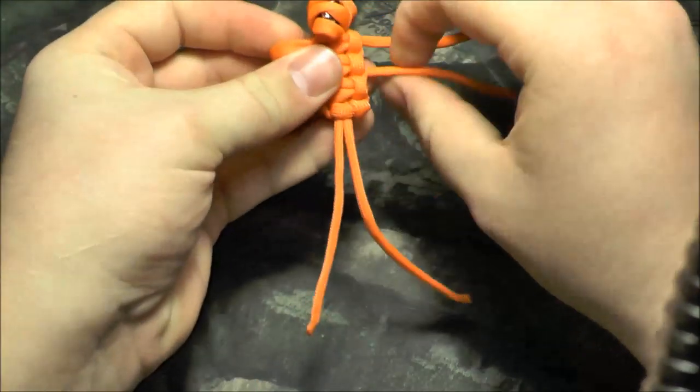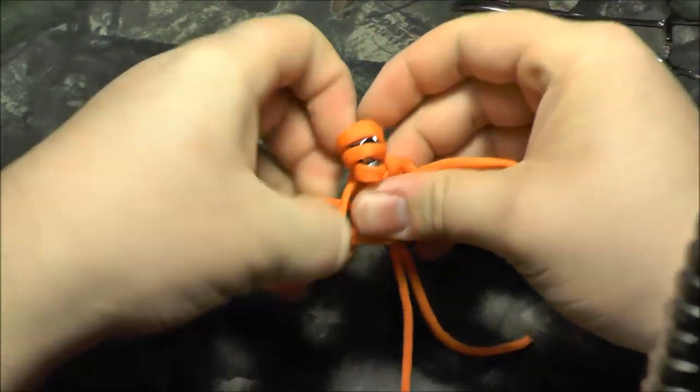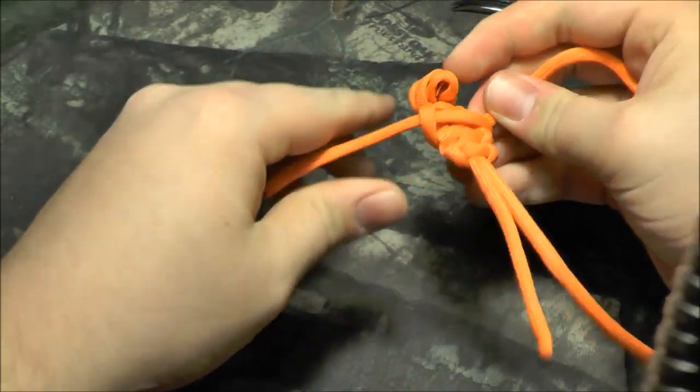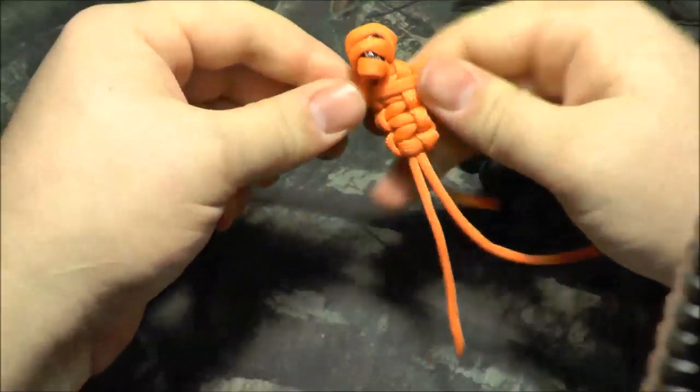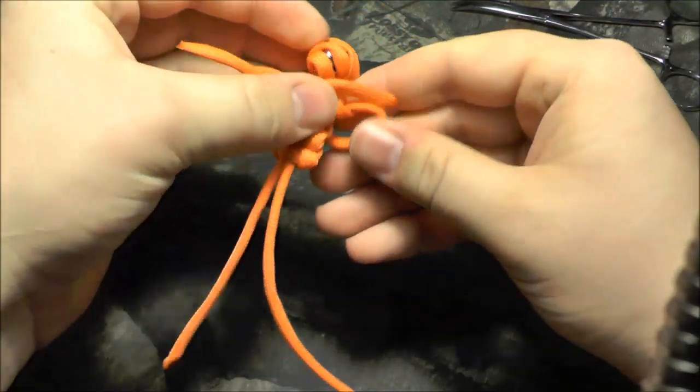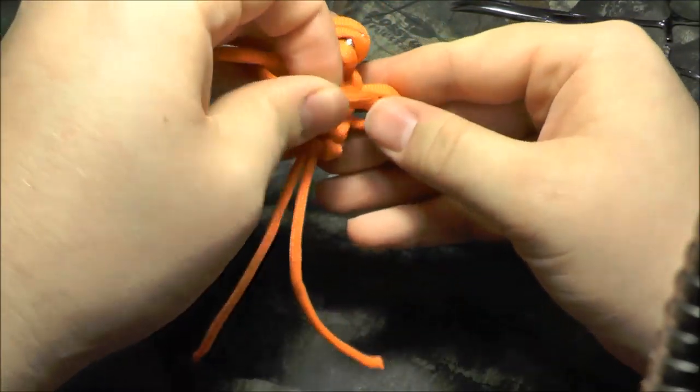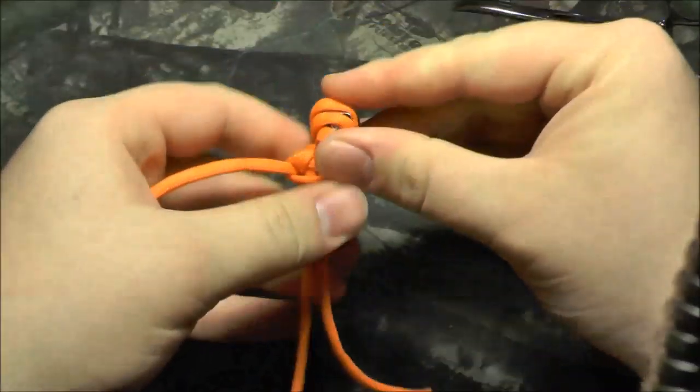And then you'll just go back over with a king cobra, probably one or two passes. This one we're going to do about two because I think I had more, 18 inches instead of the 24 inches, that's about perfect. Probably get a third one out of that.